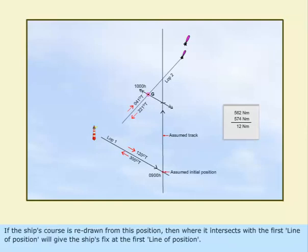If the ship's course is redrawn from this position, then where it intersects with the first line of position will give the ship's fix at the first line of position.